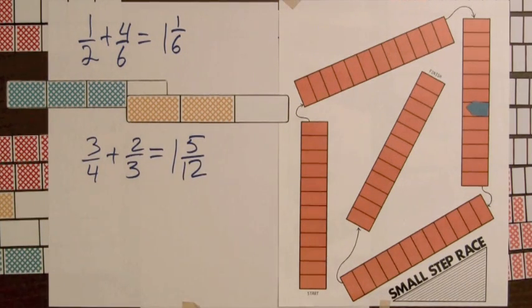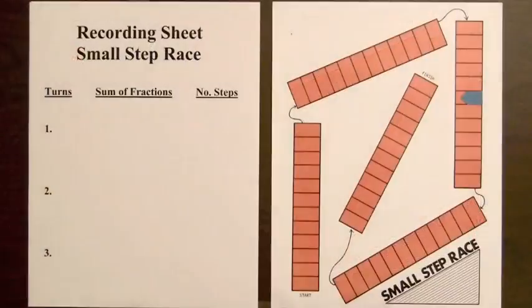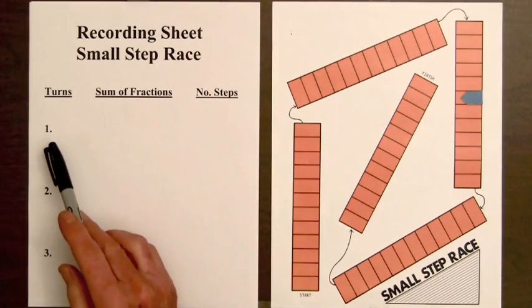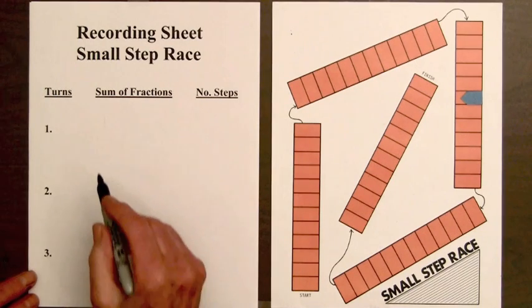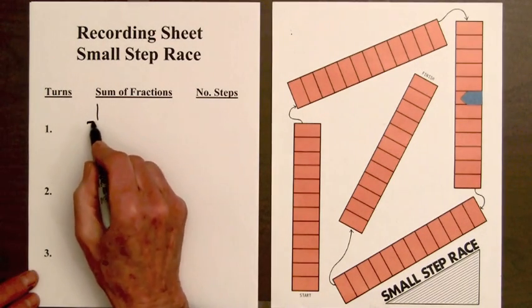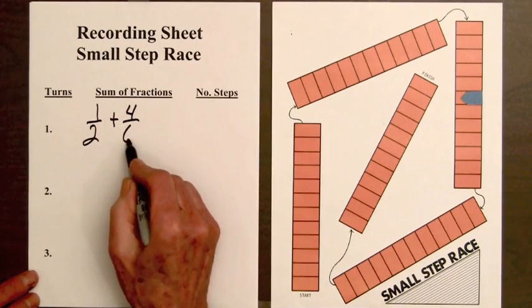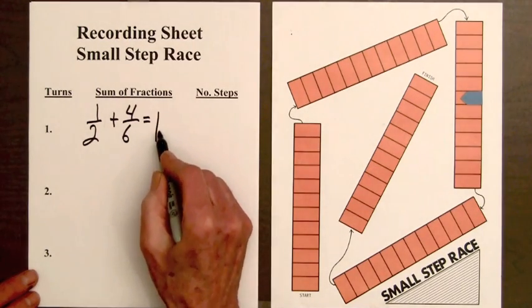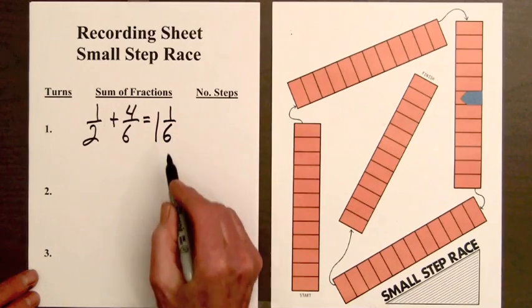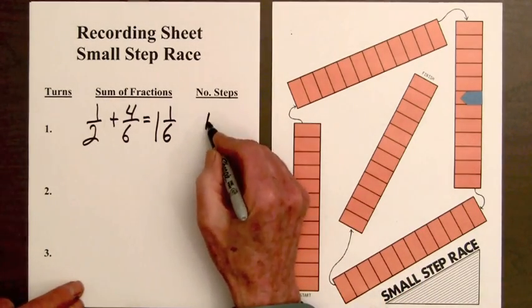Some teachers have students record the fraction sums for each turn on the small step race map. So let's look at this recording sheet. Now on the first turn, we had the fractions one-half and four-sixths. So we can write one-half plus four-sixths. And that was equal to one and one-sixth. Remember we took one whole bar, and two more steps, so it was a total of fourteen steps.